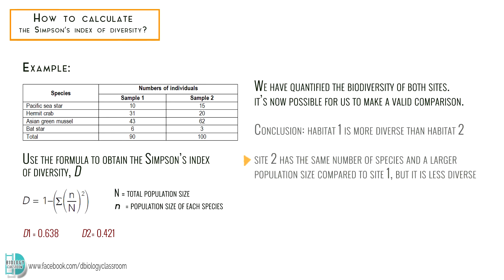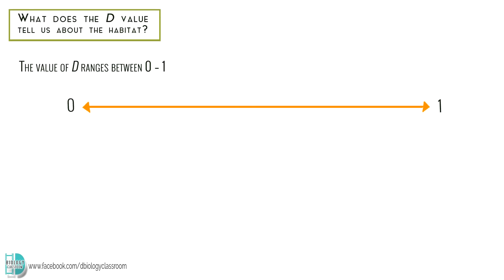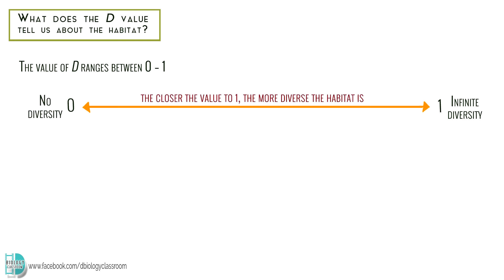We can conclude that habitat 1 is more diverse than habitat 2. You probably have noticed that even though the second site has the same number of species and a larger population size compared to the first one, it is less diverse. This is due to the fact that habitat 1 has more evenness compared to habitat 2. The value of D ranges between 0 to 1: 1 represents infinite diversity, and 0 represents no diversity. So the closer the value is to 1, the more diverse the habitat is.